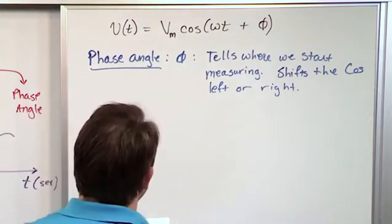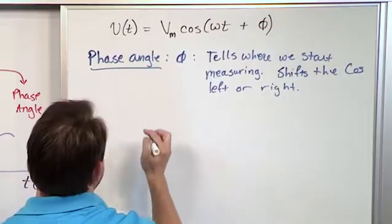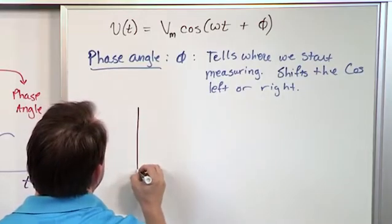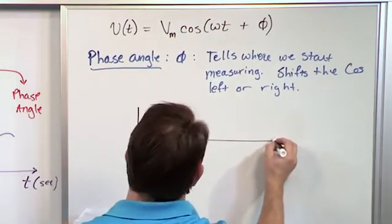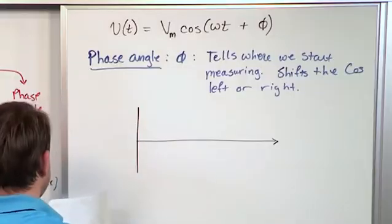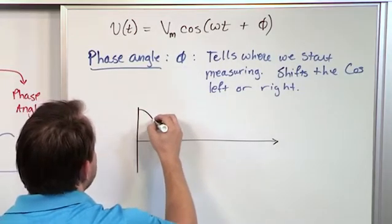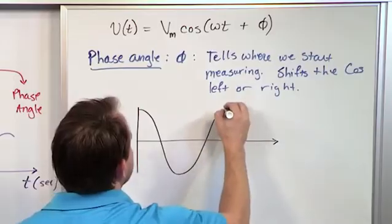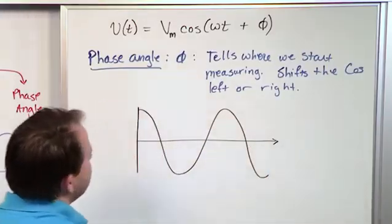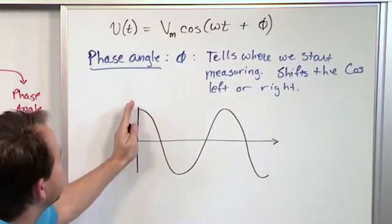So let's draw a regular cosine. So let me draw this here. Right? I'm not even going to put any labels. It doesn't really matter. A regular cosine starts at the top, and then comes down and up, down and up.